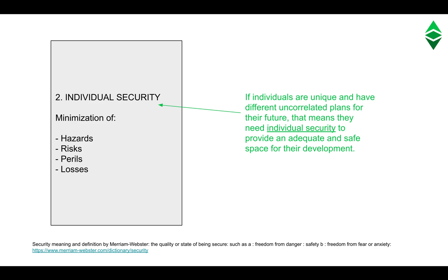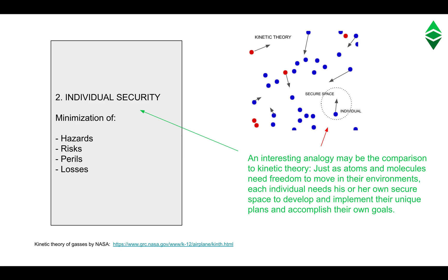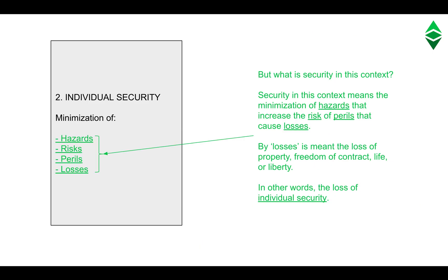Two: individual security. If individuals are unique and have different, uncorrelated plans for their future, that means they need individual security to provide an adequate and safe space for their development. An interesting analogy may be the comparison to kinetic theory: just as atoms and molecules need freedom to move in their environments, each individual needs his or her own secure space to develop and implement their unique plans and accomplish their own goals.